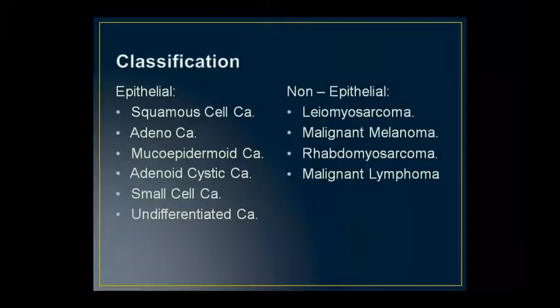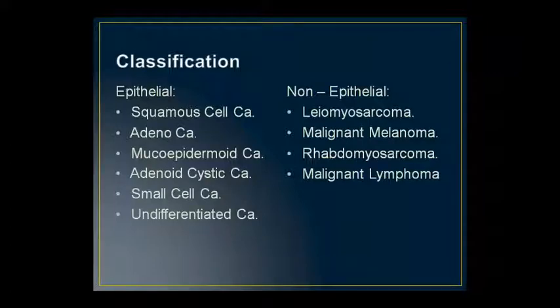If we classify esophageal cancers, they are divided into epithelial and non-epithelial categories. Epithelial types include: adenocarcinoma, mucoepidermoid carcinoma, adenoid cystic carcinoma, small cell carcinoma, and undifferentiated carcinoma. Non-epithelial types include: leiomyosarcoma, malignant melanoma, rhabdomyosarcoma, and malignant lymphoma.